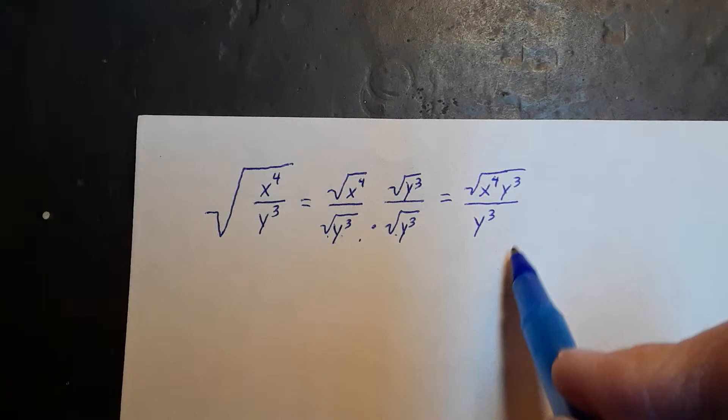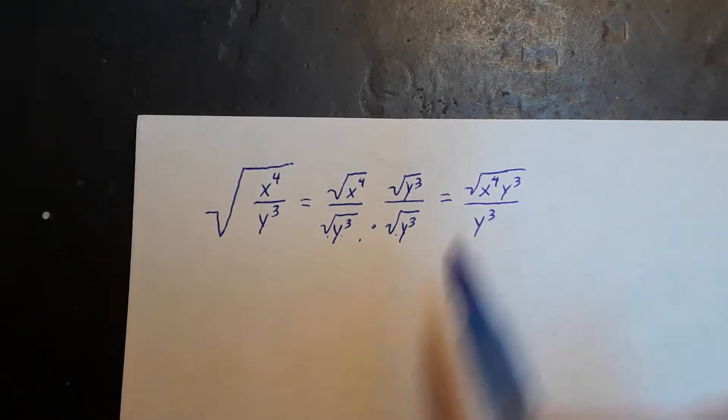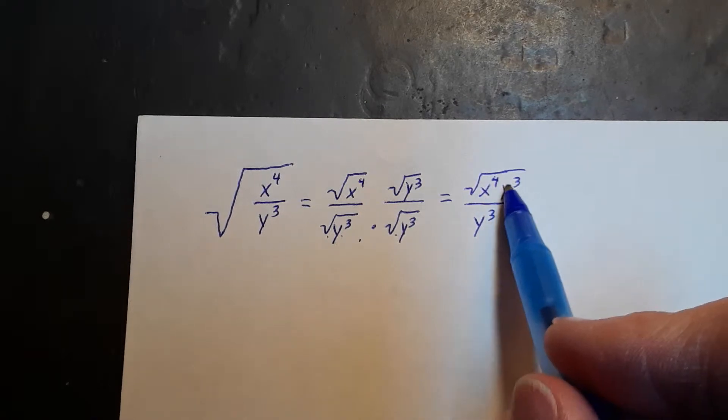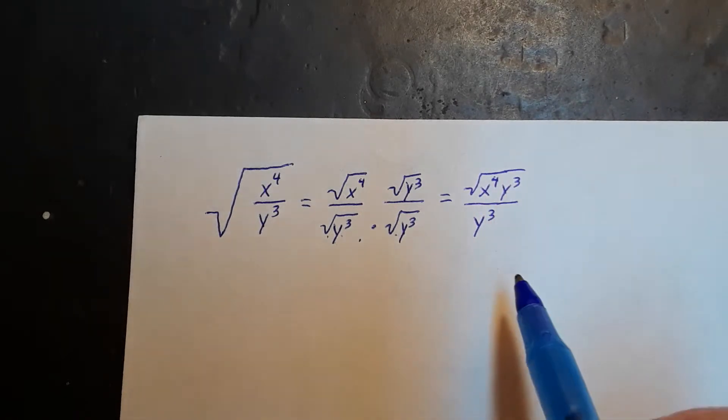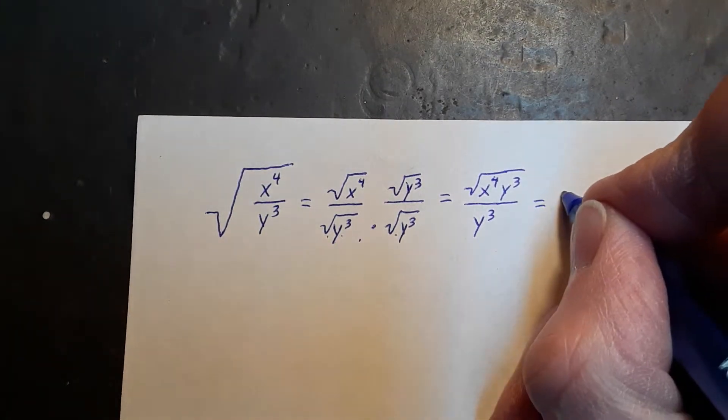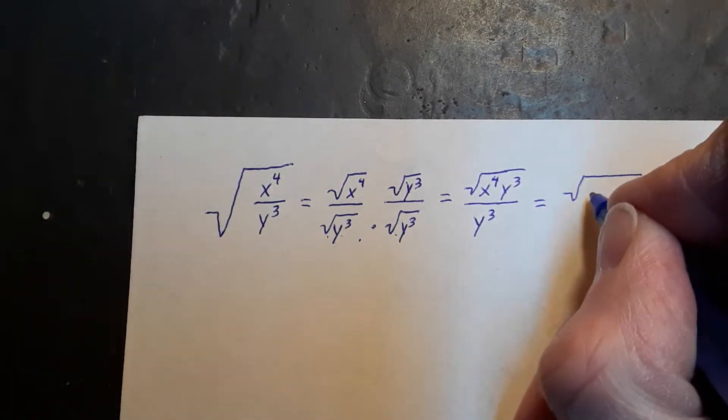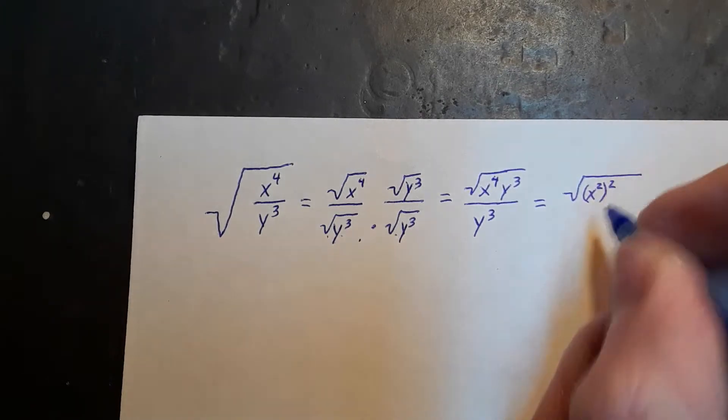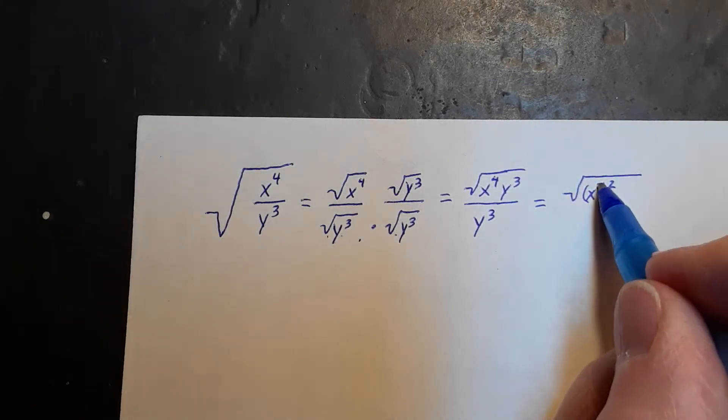So I have this fraction. Now there is a simplification that I can do in the numerator here. I can factor this x to the fourth, and I can factor this y to the third. The x to the fourth, I'm going to rewrite a little bit so that it illustrates the fact that this is really x squared squared. And so this square root will act as an inverse on that.